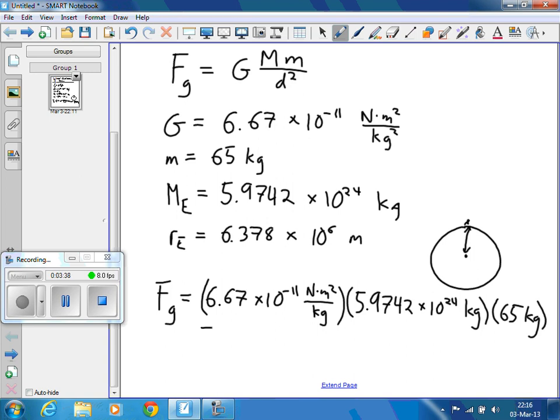And the whole thing gets divided by the distance between me and the Earth, which is equal to the radius of Earth, which is given as 6.378 times 10 to the 6th meters squared.